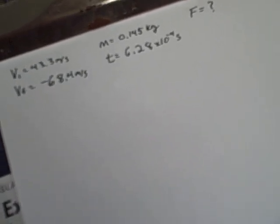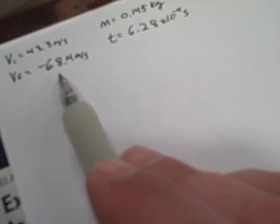Okay, so the problem we're looking at is the quiz question from today. A baseball arrives at home plate at a speed of 43.3 meters per second, which is the initial velocity. The batter hits the ball along the same line straight back to the pitcher in the negative direction with a magnitude of 68.4 meters per second, and the baseball has a mass of 0.145 kilograms.